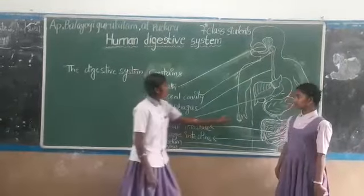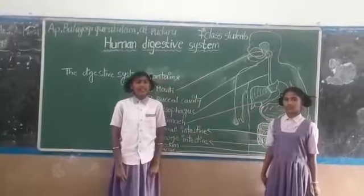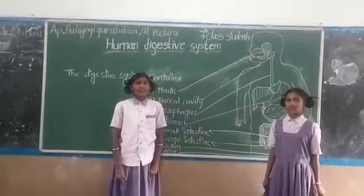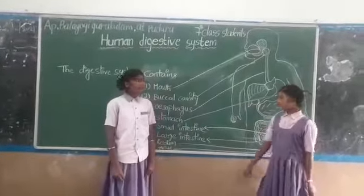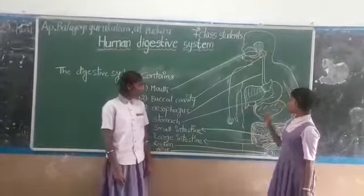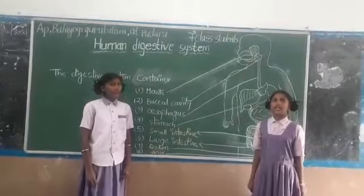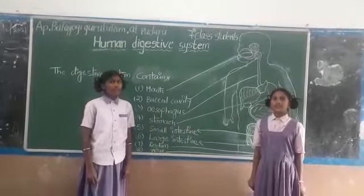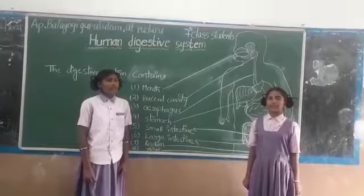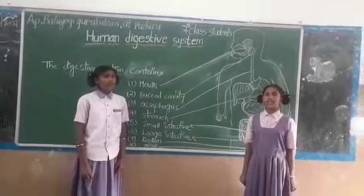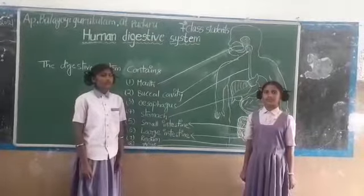This is the Stomach. Stomach is a muscular sac-like structure. Food is churned and mixed with its muscles. This is the Duodenum. Duodenum is the first part of the small intestine. Bile juice from the liver and pancreatic juice from the pancreas enter into the Duodenum.